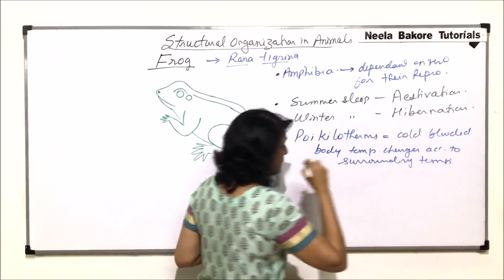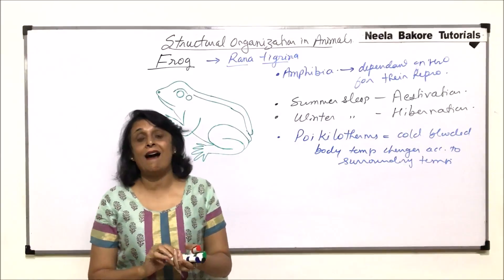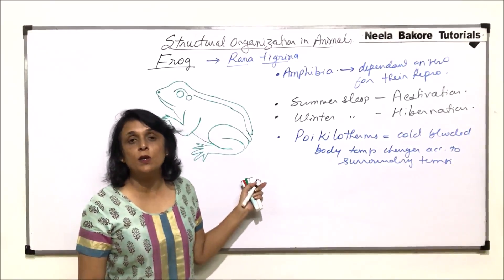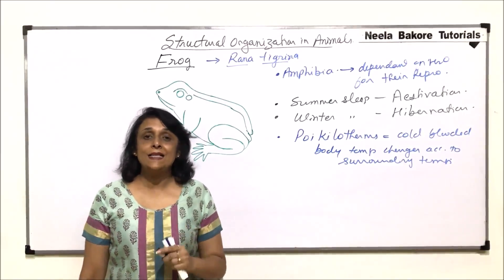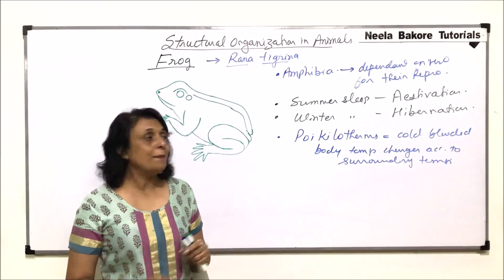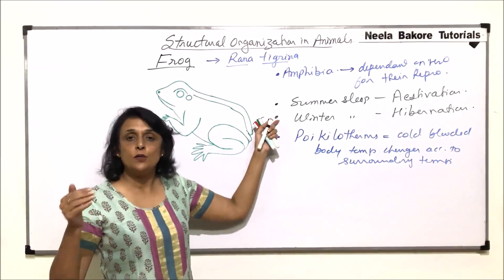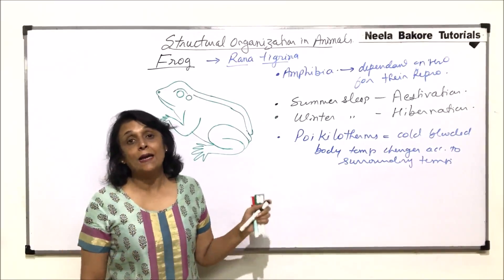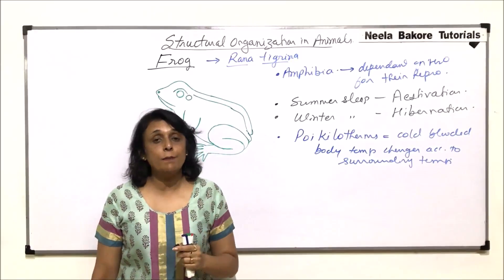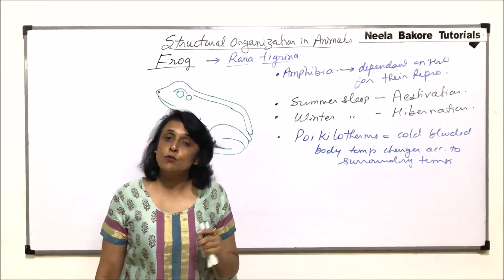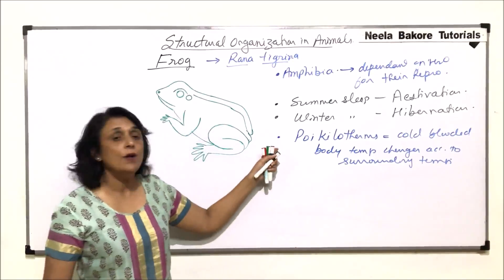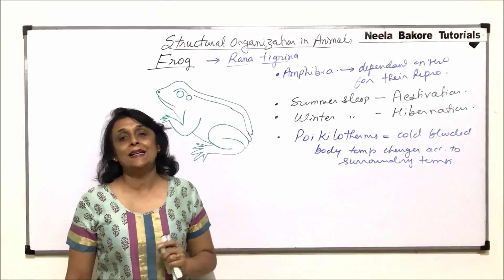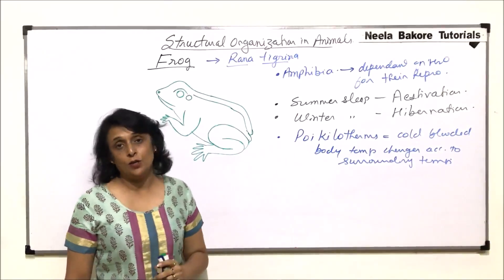That means if the outer temperature becomes very high, the body temperature is going to rise. And if body temperature rises beyond a certain limit, the enzymes would get denatured. And same thing happens if the outer temperature falls too much. If it gets really cold, then the body temperature is also going to fall. And below a certain temperature, the enzymatic activities would be reduced and finally stopped. So they escape from extreme heat and extreme cold. They go for aestivation or hibernation.